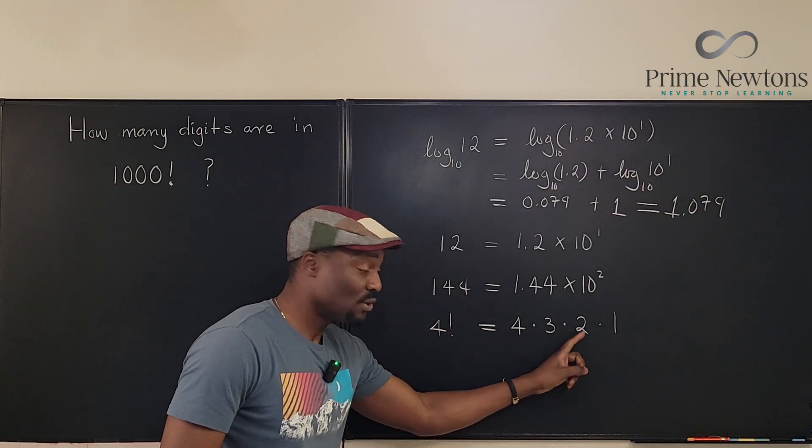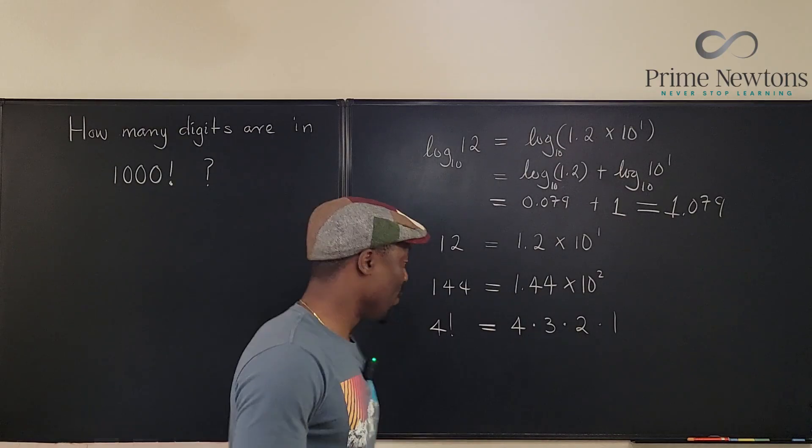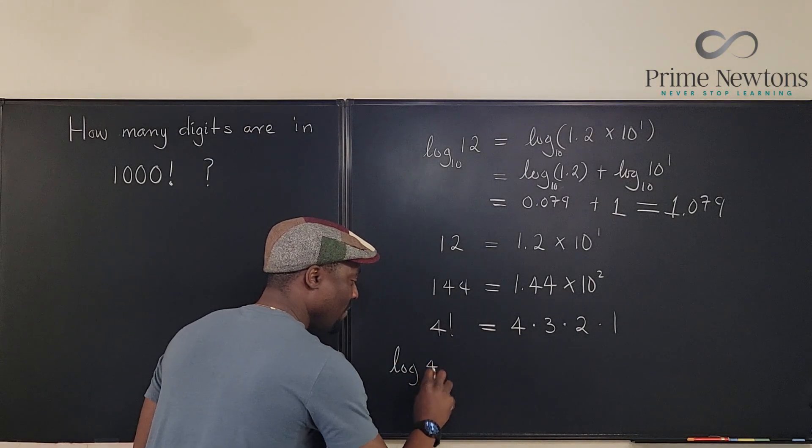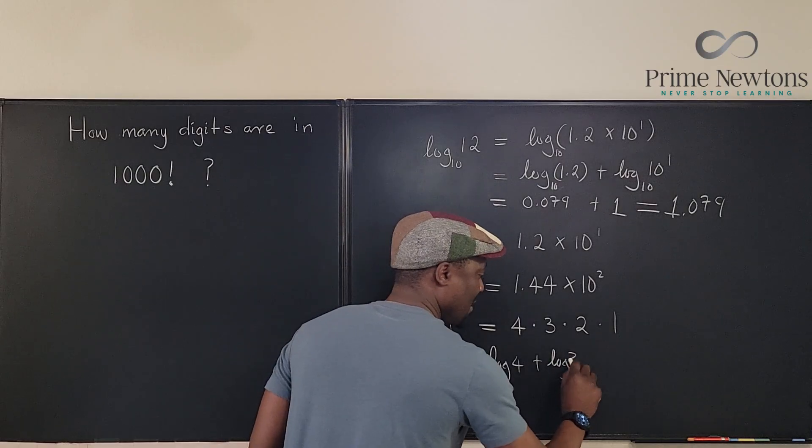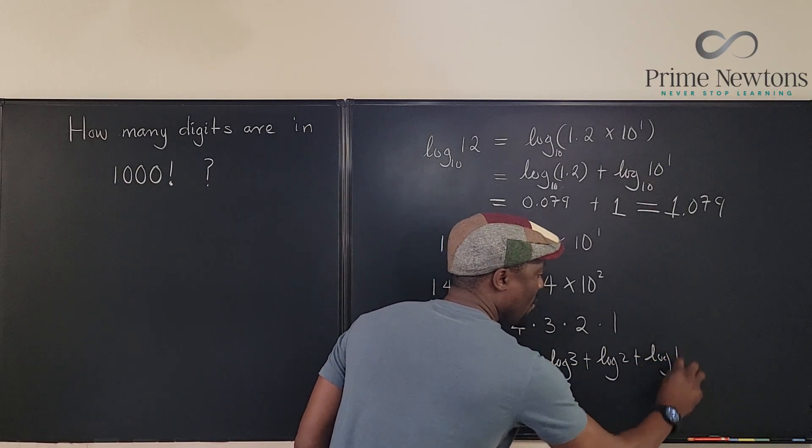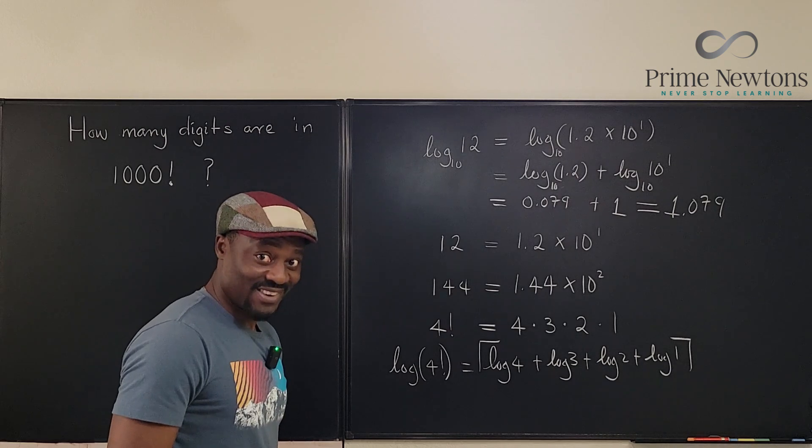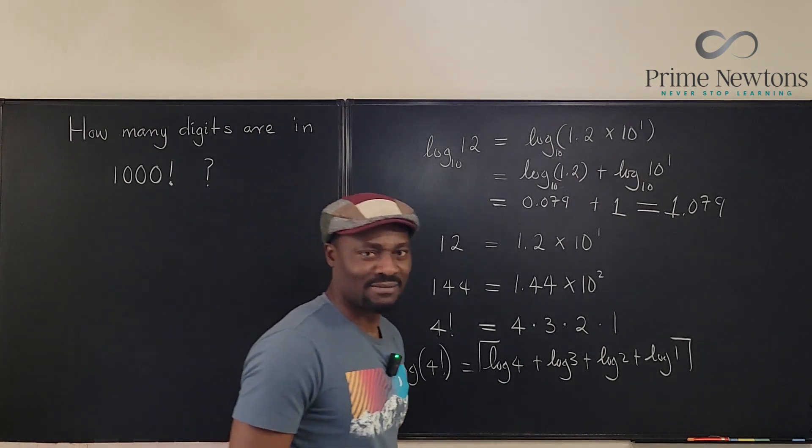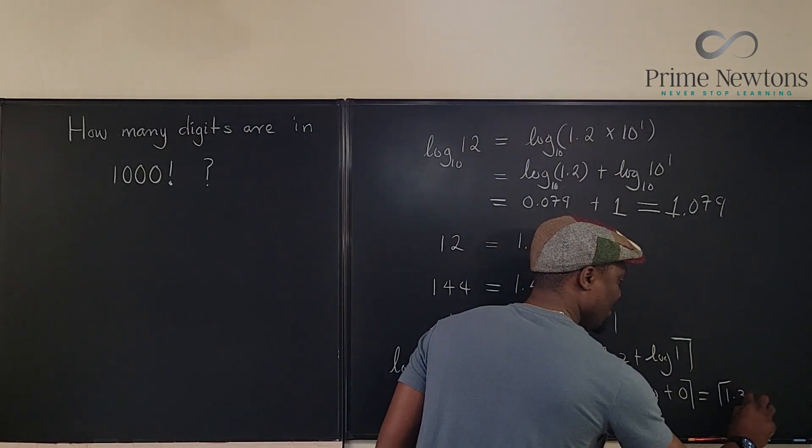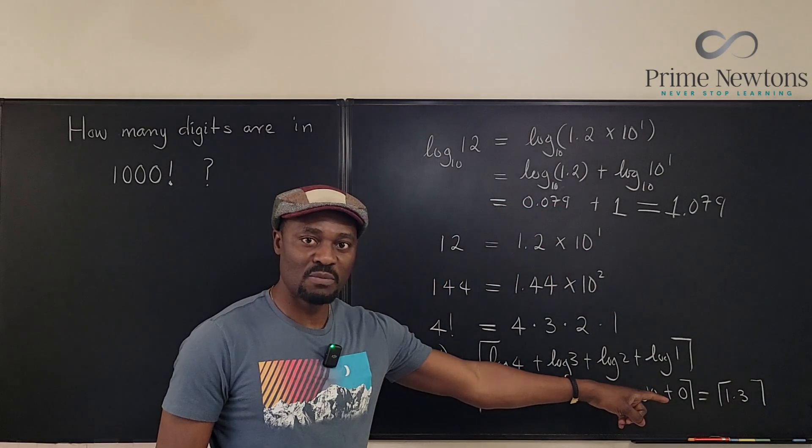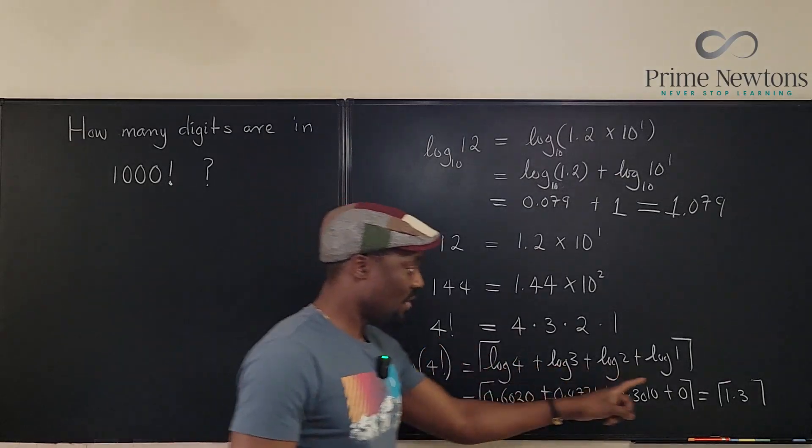Let's do that here. We know that 4 times 3 times 2 times 1 is going to be 24. So there are two digits in the answer. But assuming we don't know how to do multiplication, we're going to apply the log rule. We're going to say log of 4 factorial will be equal to log 4 times 3. But that means it's addition. Log 2 plus log 1. But we're going to take the ceiling of the answer we get because we need to add 1 to whatever we get. What is log 4? Is the ceiling of 1.3 something. What is the ceiling of 1.3? It's 2. So even if we don't know how to multiply this out, we can tell that 4 factorial is going to contain two digits.